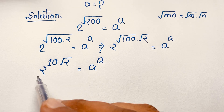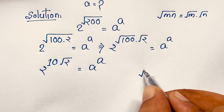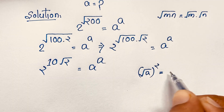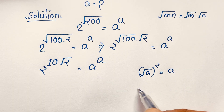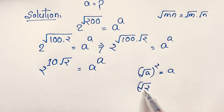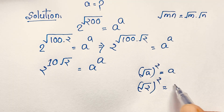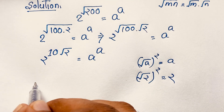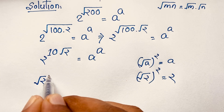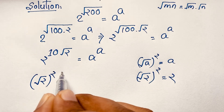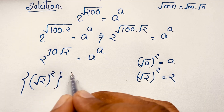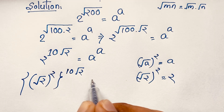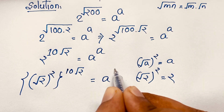Now, we can rewrite the base: √a whole to the power a equals a. So the 2 here becomes (√2)^2. So we write (√2)^2, and raising it to the exponent 10√2, gives us (√2)^2 whole to the power 10√2, which equals a to the power a.